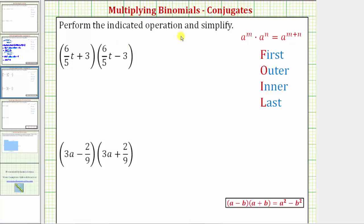We're asked to perform the indicated operation and simplify. Notice how we have the product of two binomials. These are often referred to as special products because the binomials are conjugates. Looking at the first example, notice how we have the quantity six-fifths t plus three times the quantity six-fifths t minus three.